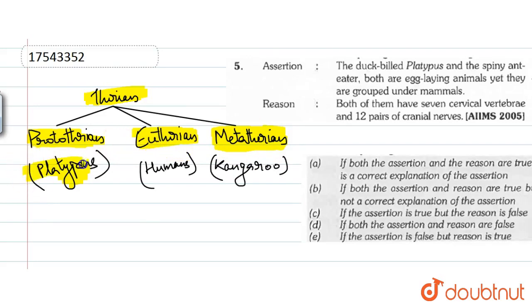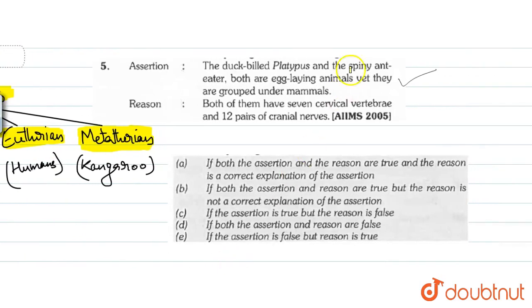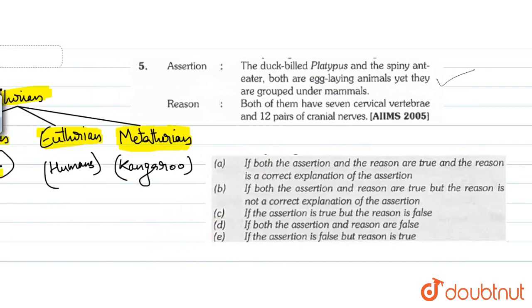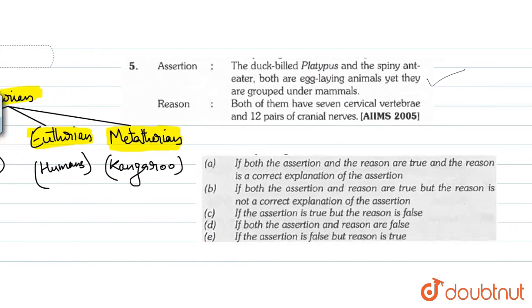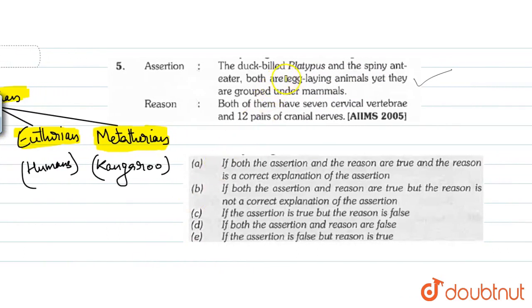They have platypus and spiny anteater, and that's why it's right to say that both are egg-laying animals yet they are grouped under mammals. So our assertion is right.